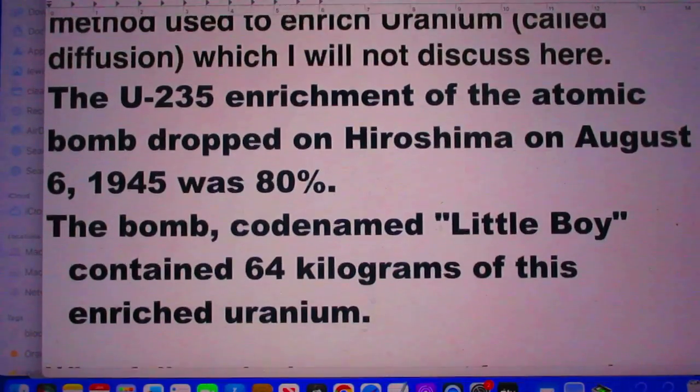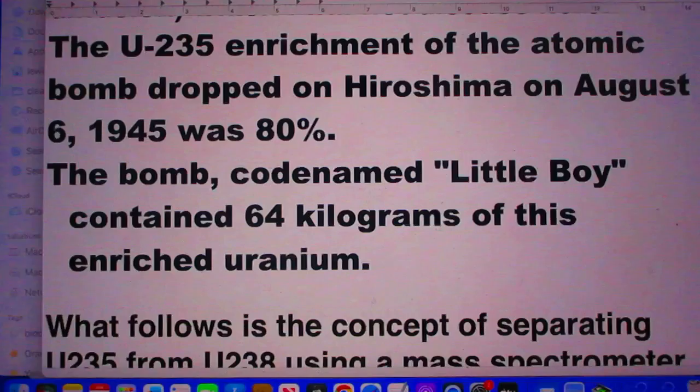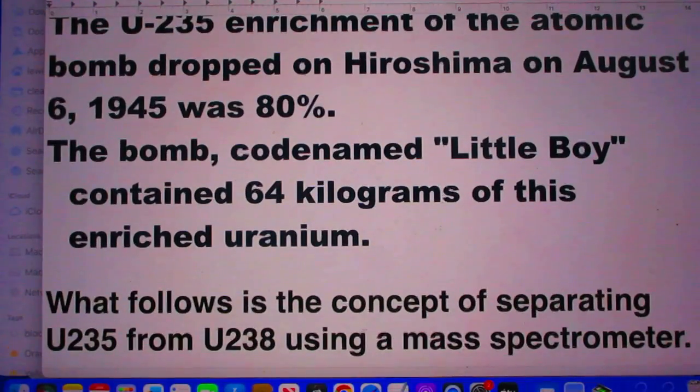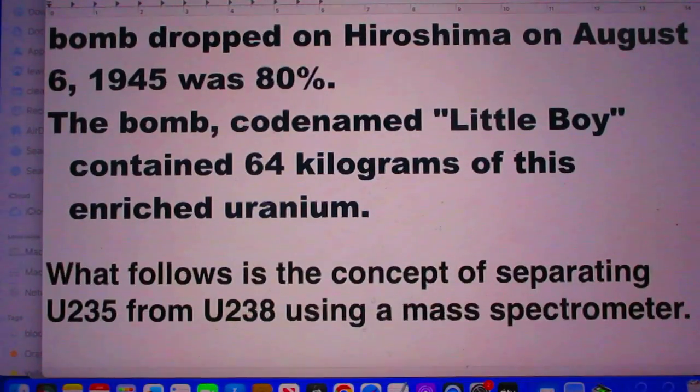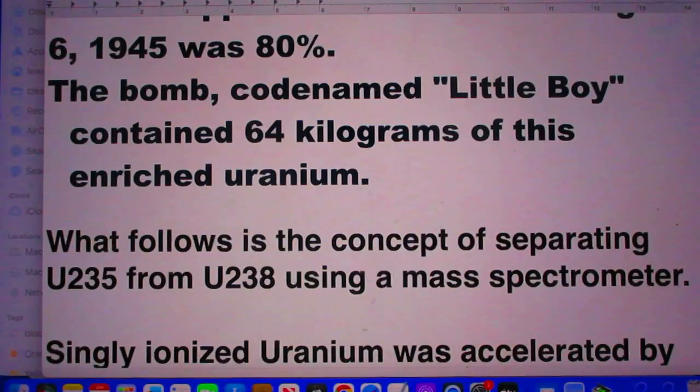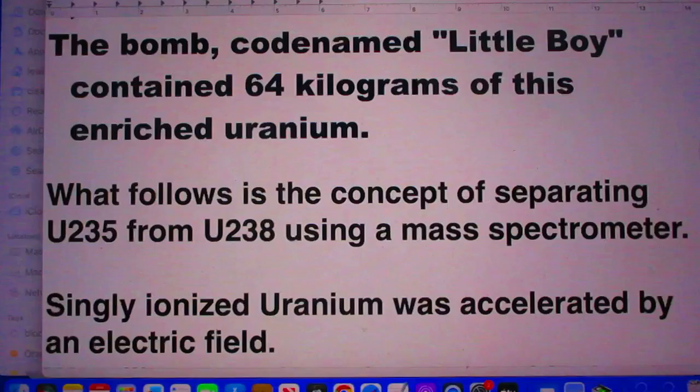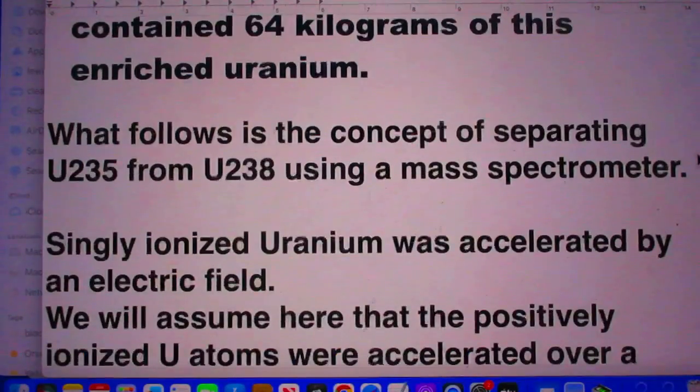The uranium-235 enrichment of the atomic bomb dropped on Hiroshima on August 6, 1945 was 80%. The bomb, codenamed Little Boy, contained 64 kilograms of this enriched uranium.